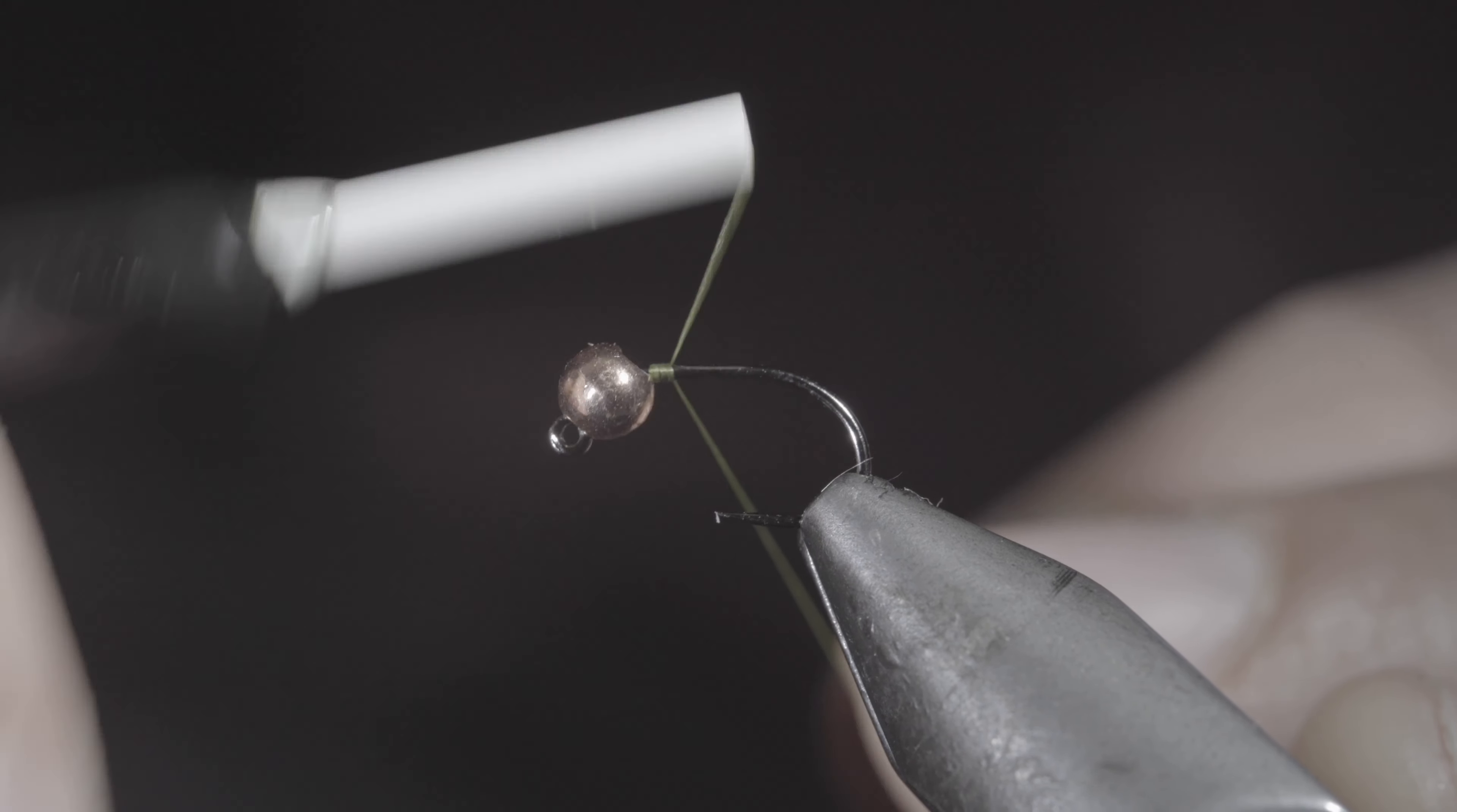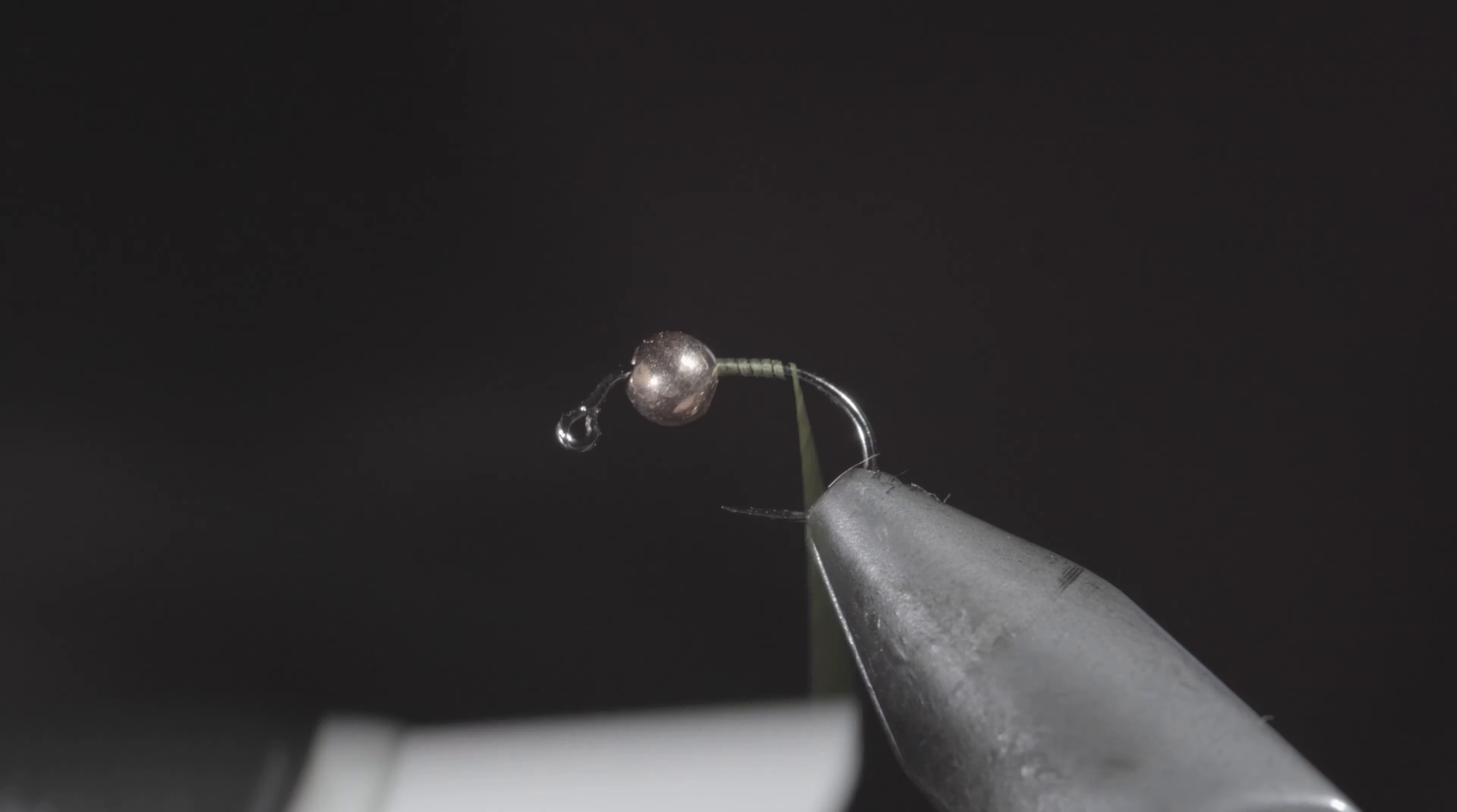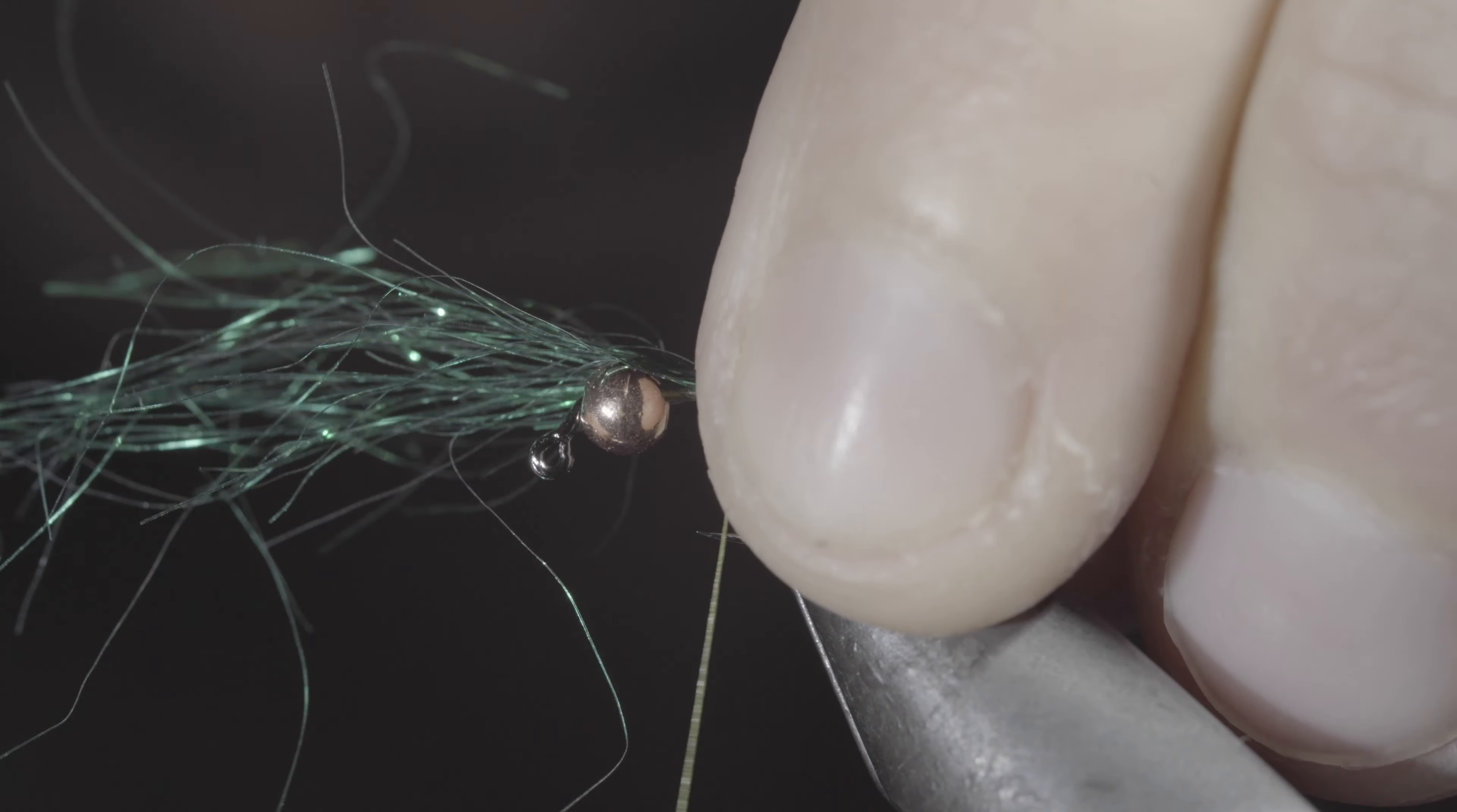This buggy attractor pattern can help you catch more fish. To tie it, we'll start off with some olive thread. Continue wrapping until you reach the bend of your hook and grab some green synthetic dubbing. Align the fibers and secure them to the back of the fly.